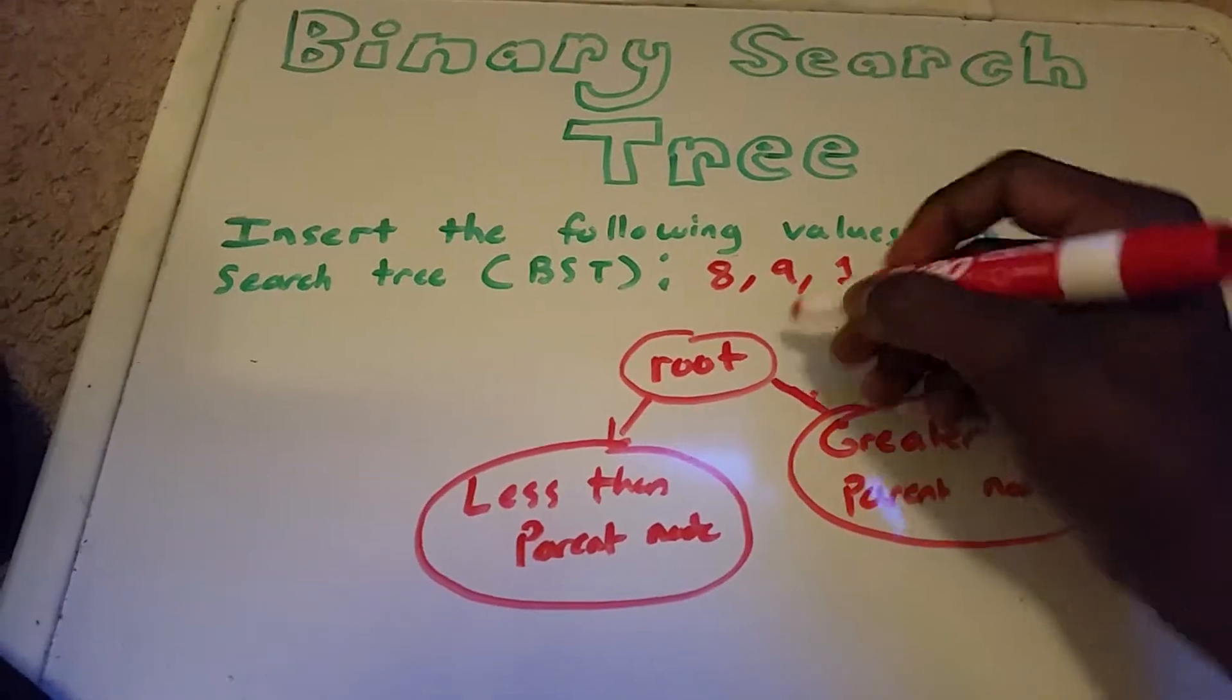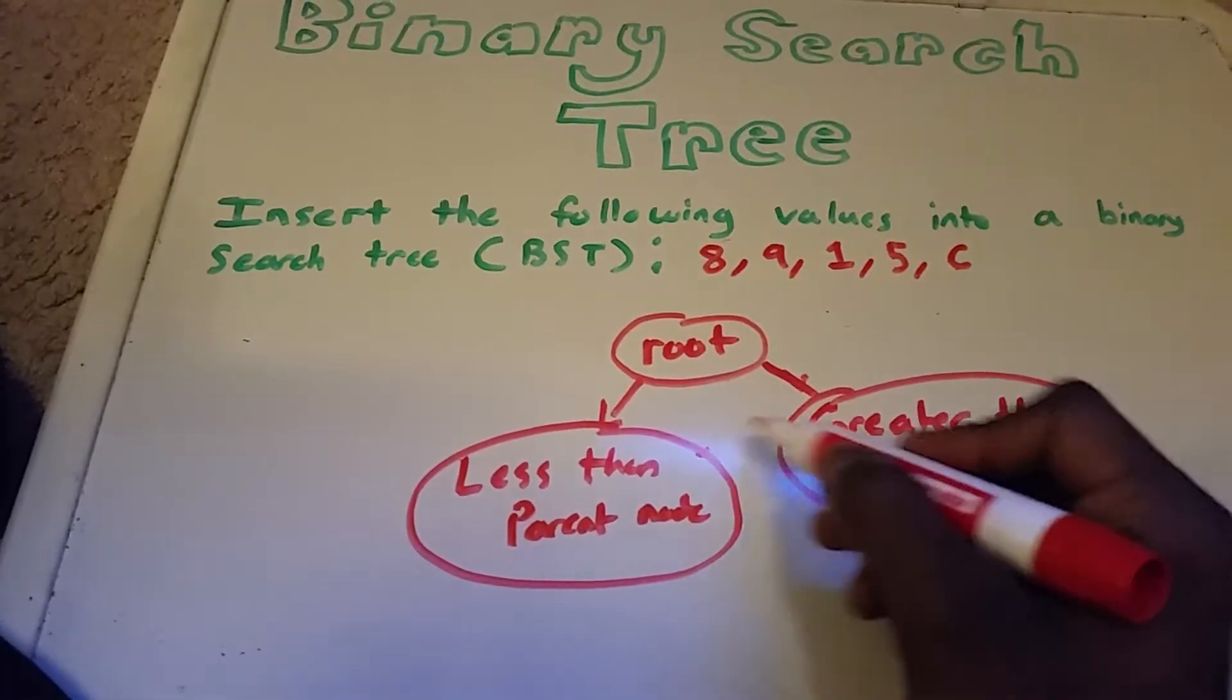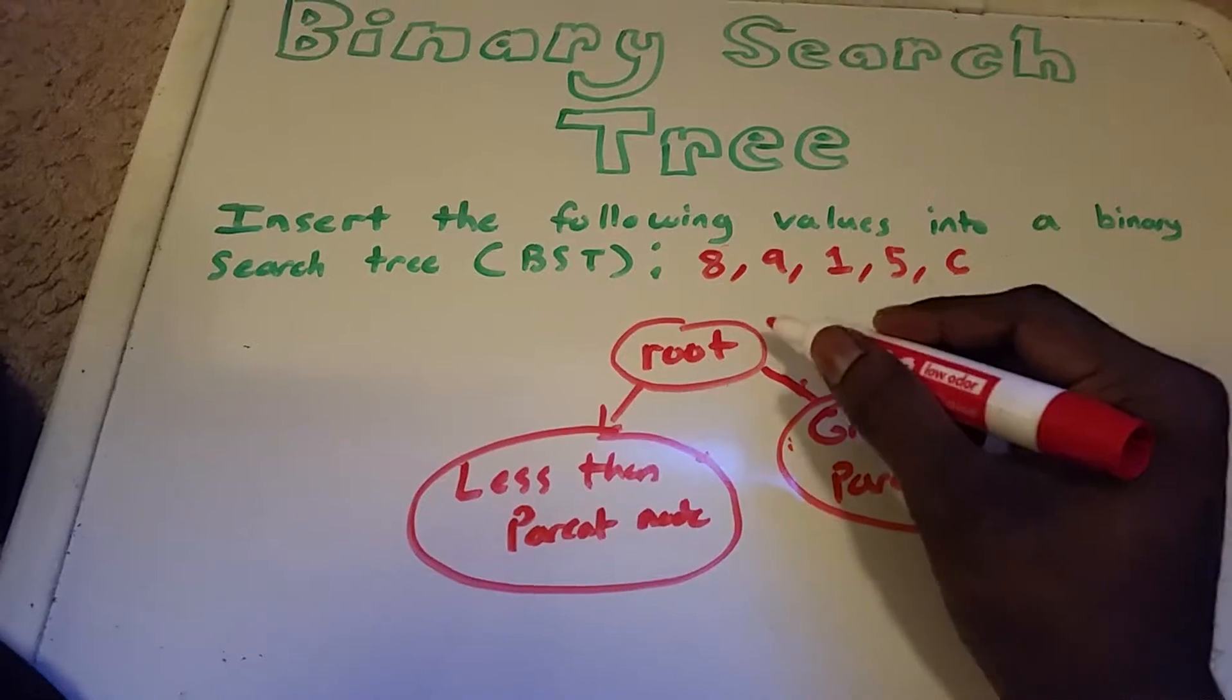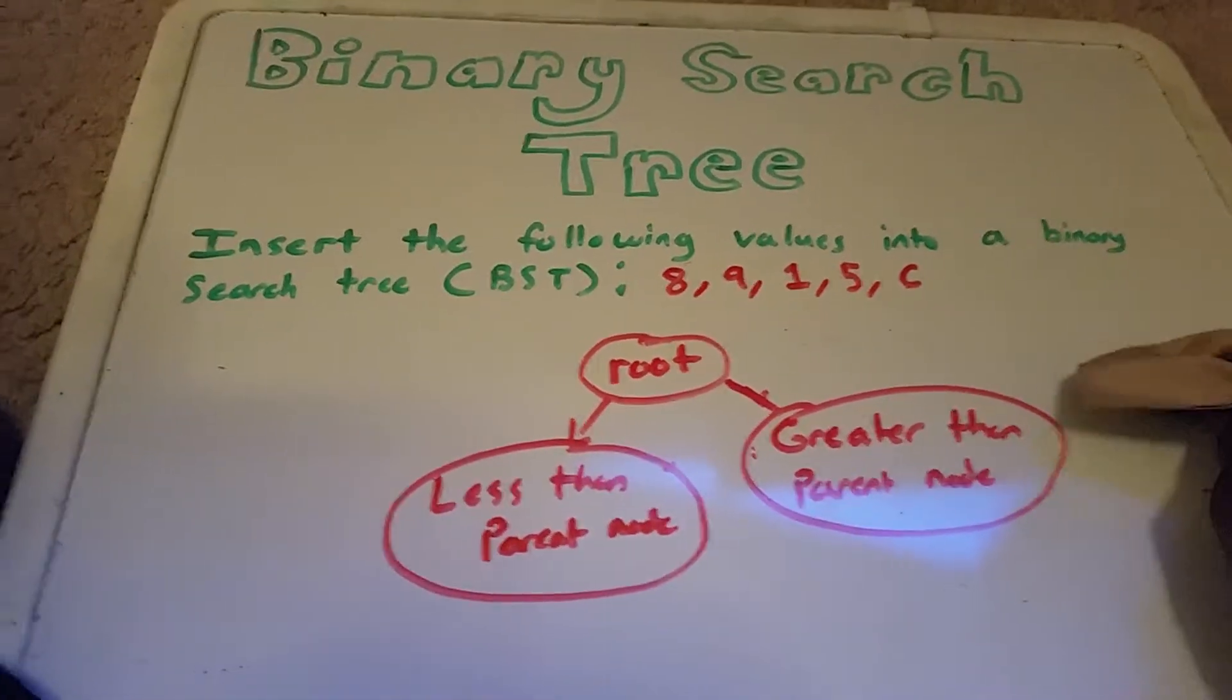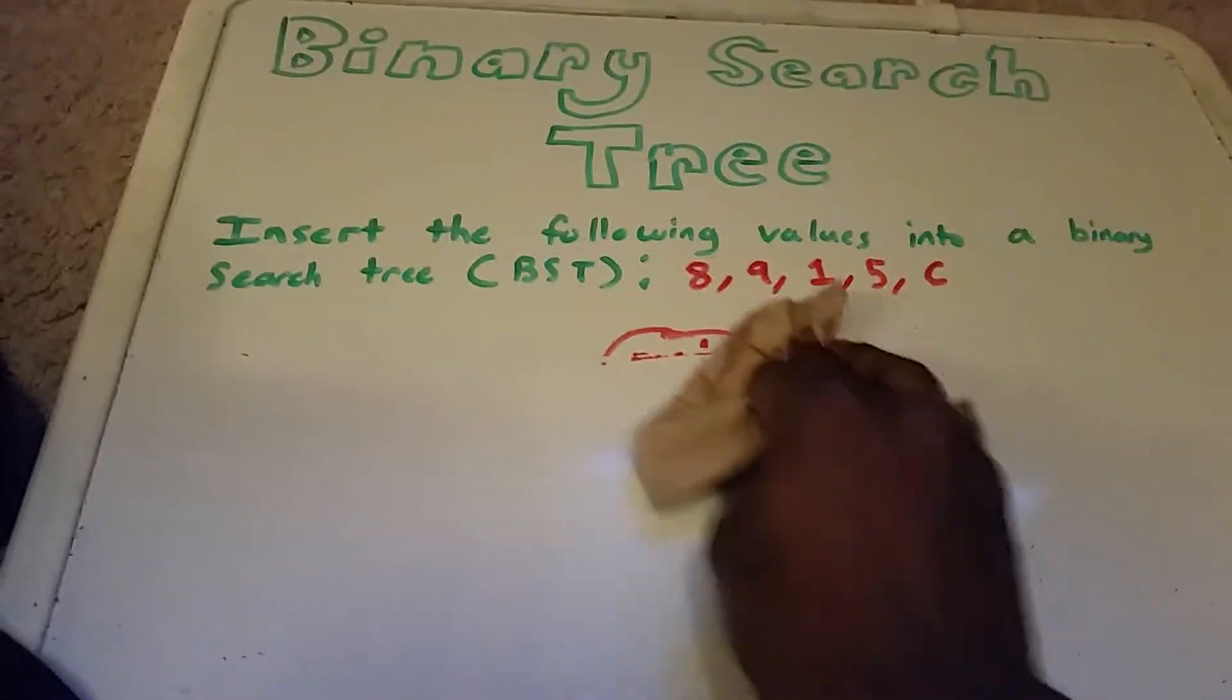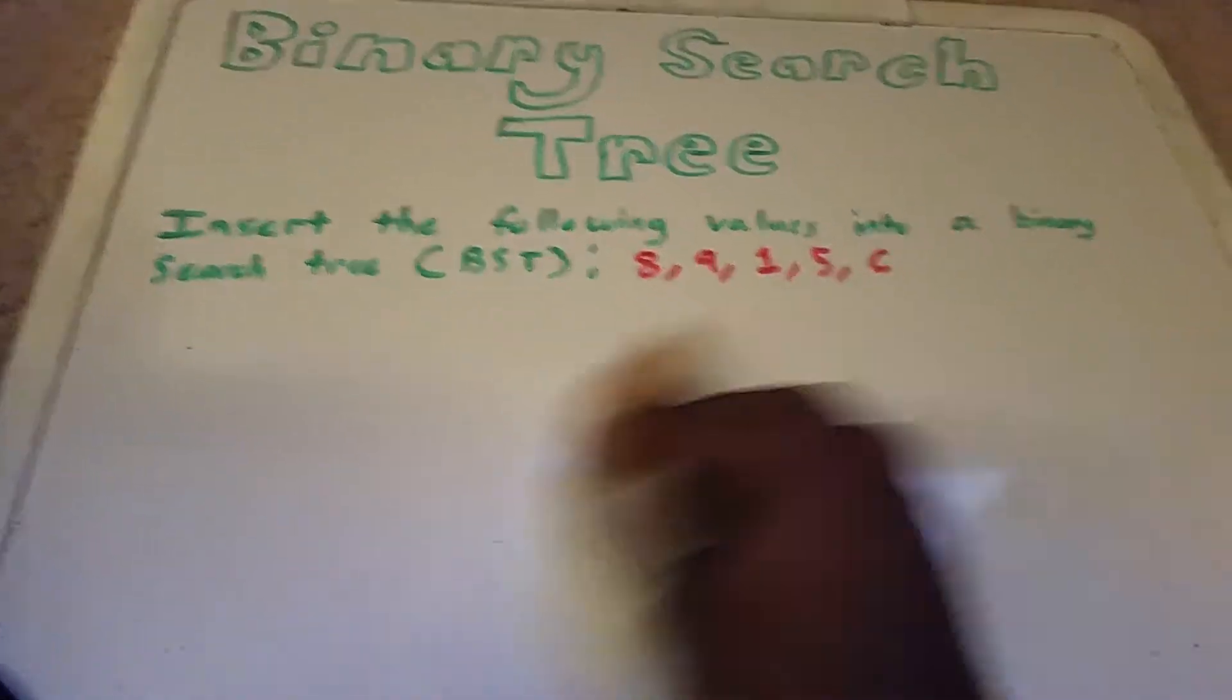In this case our root is the parent of both of these two nodes here. So the root is the parent in this case. And the very first value that we enter into the tree is called the root.